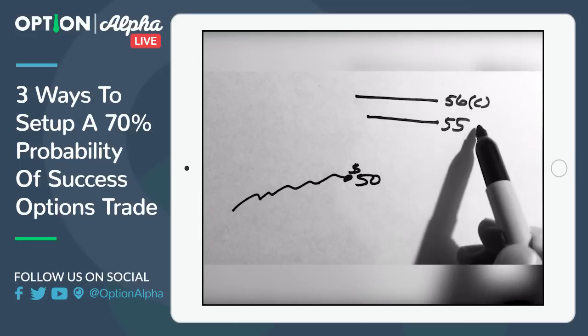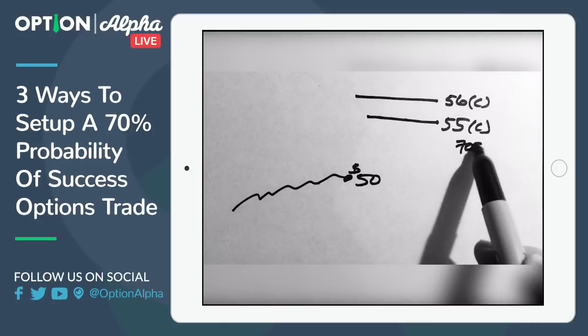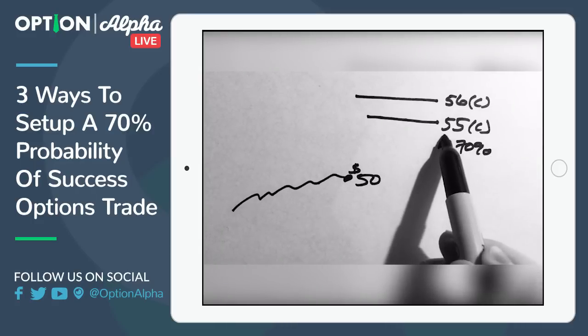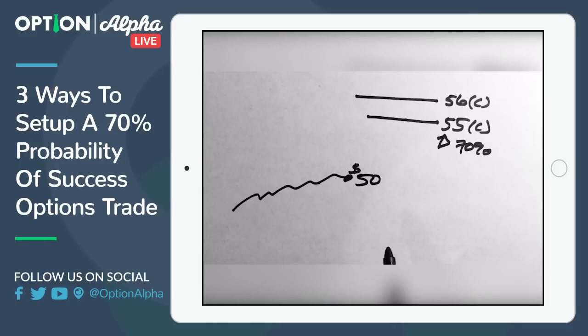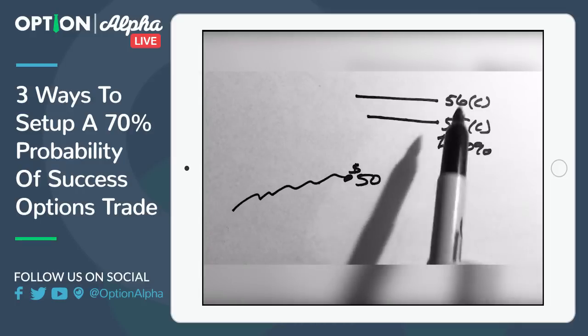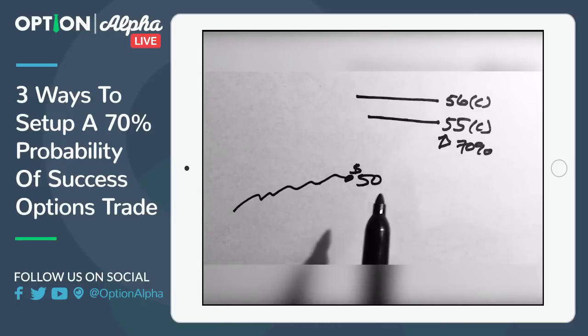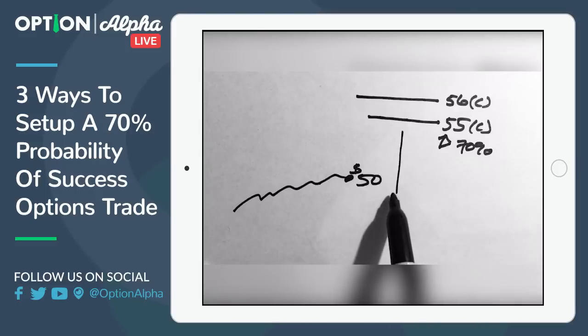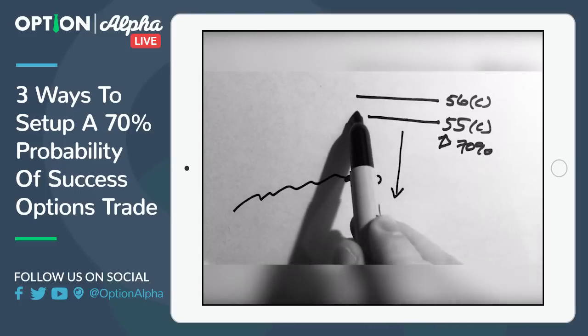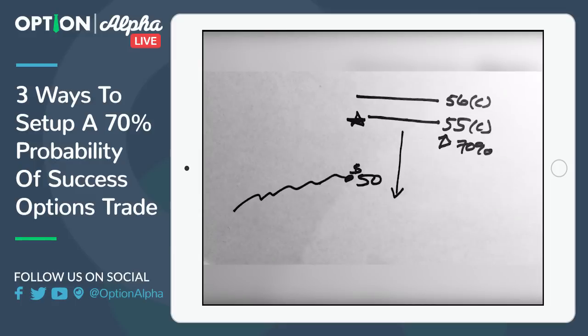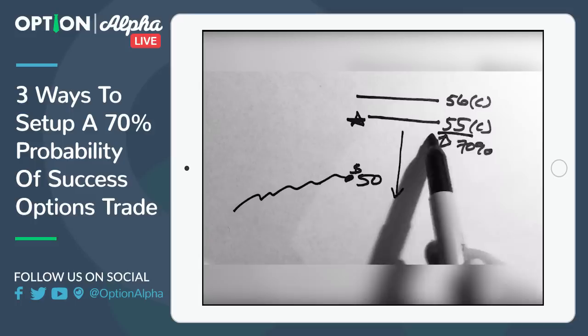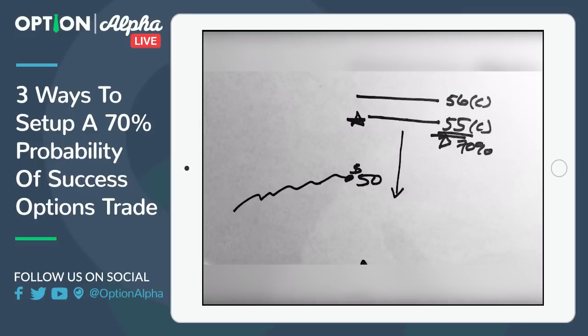And again, you can set this up so it has a 70% chance of success. It's very easy to find these. It's just in your broker platform. We've got a lot of videos on this at Option Alpha. So you can just find the exact strike price for whatever month you're trading that has a 70% chance of being out of the money. You sell that strike price and then you buy something else beyond it to create a risk defined position. So in this case, the stock has a 70% chance of making money because all you want it to do is close below 55. The stock can rally, it can go sideways, it can go down. But as long as it closes below 55, then you end up making money in this scenario.